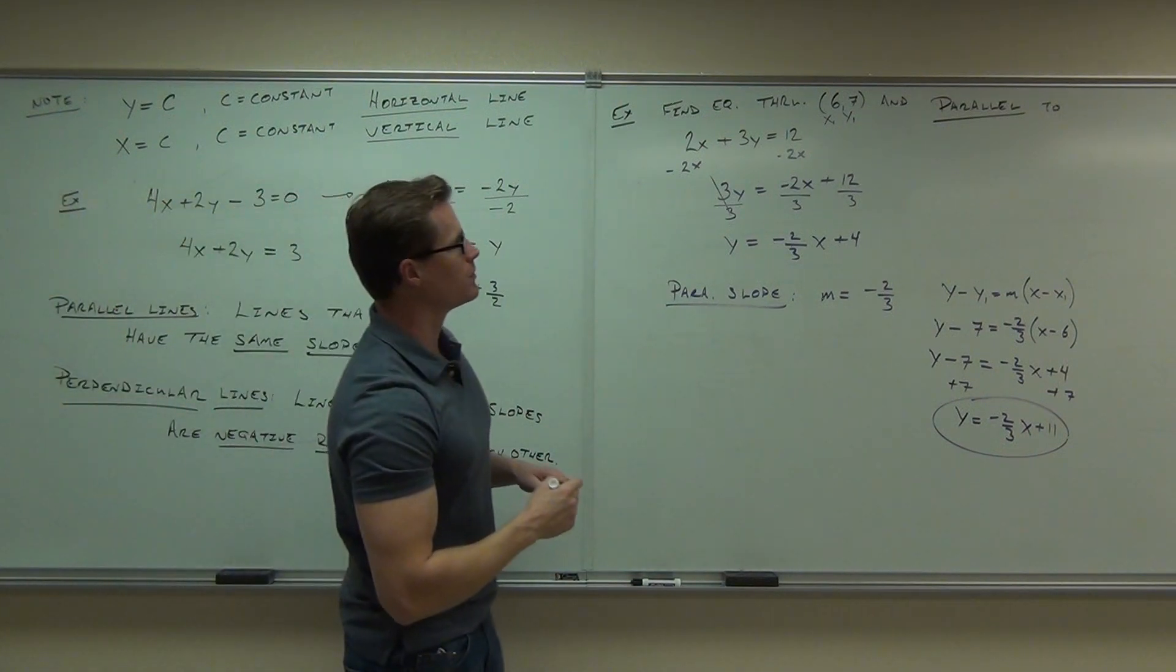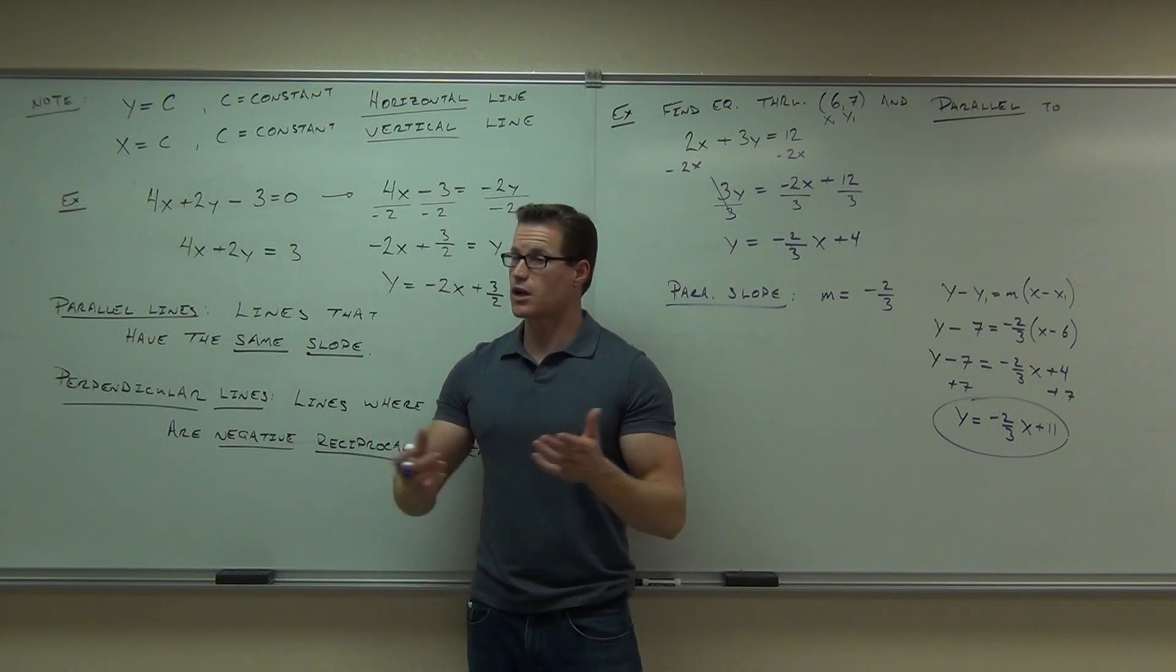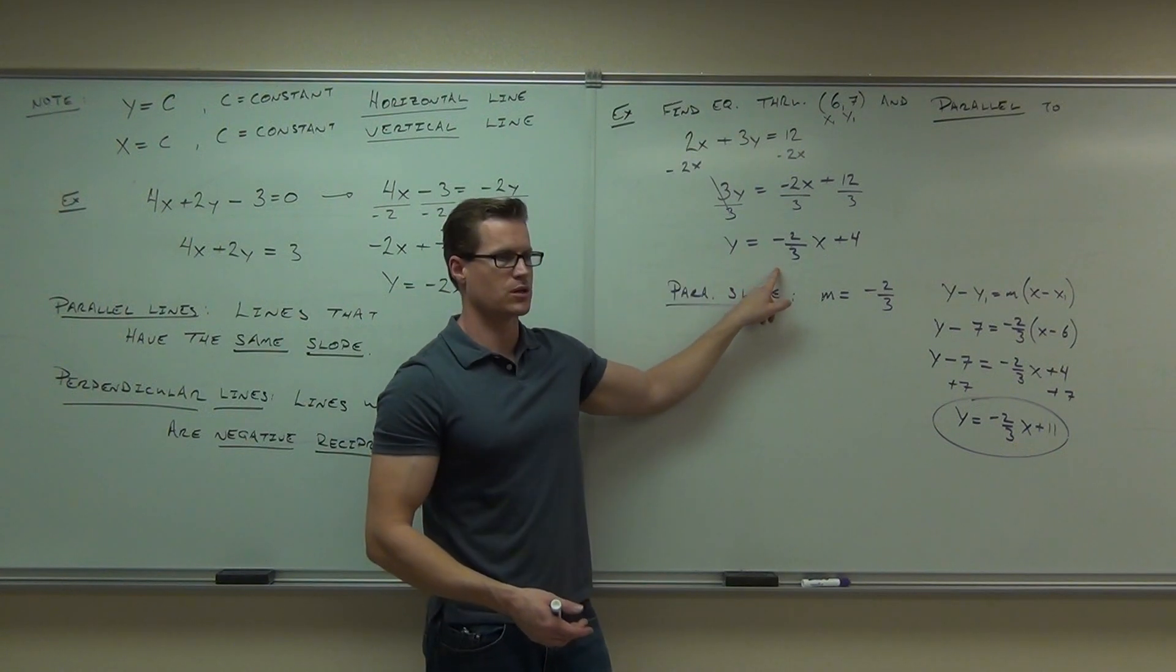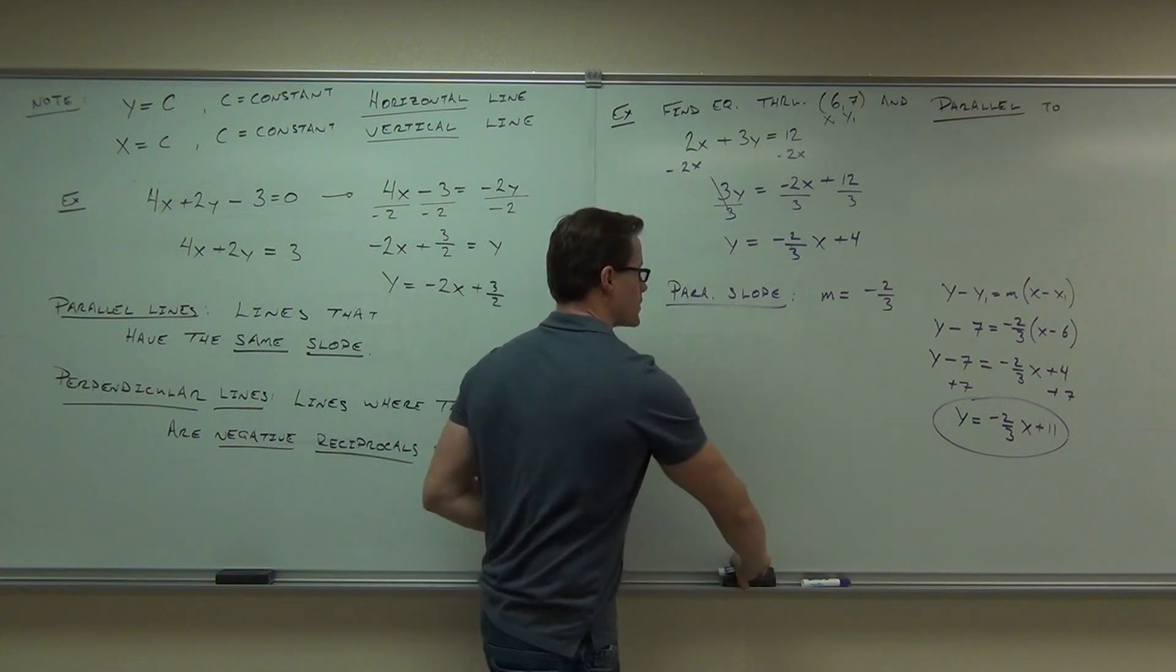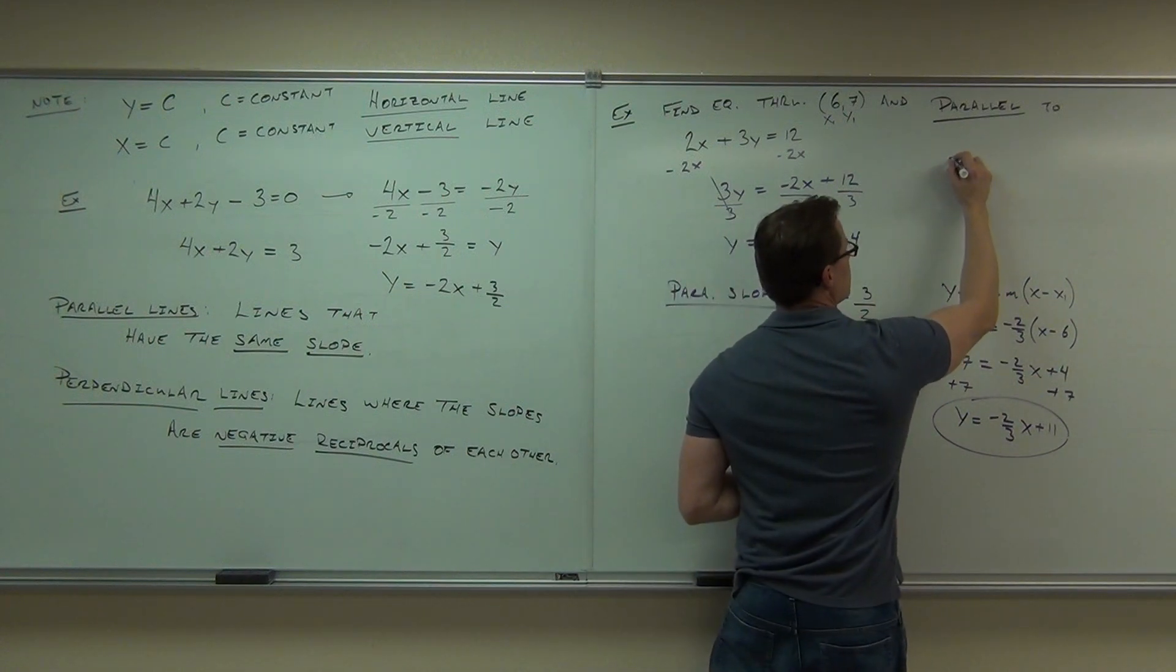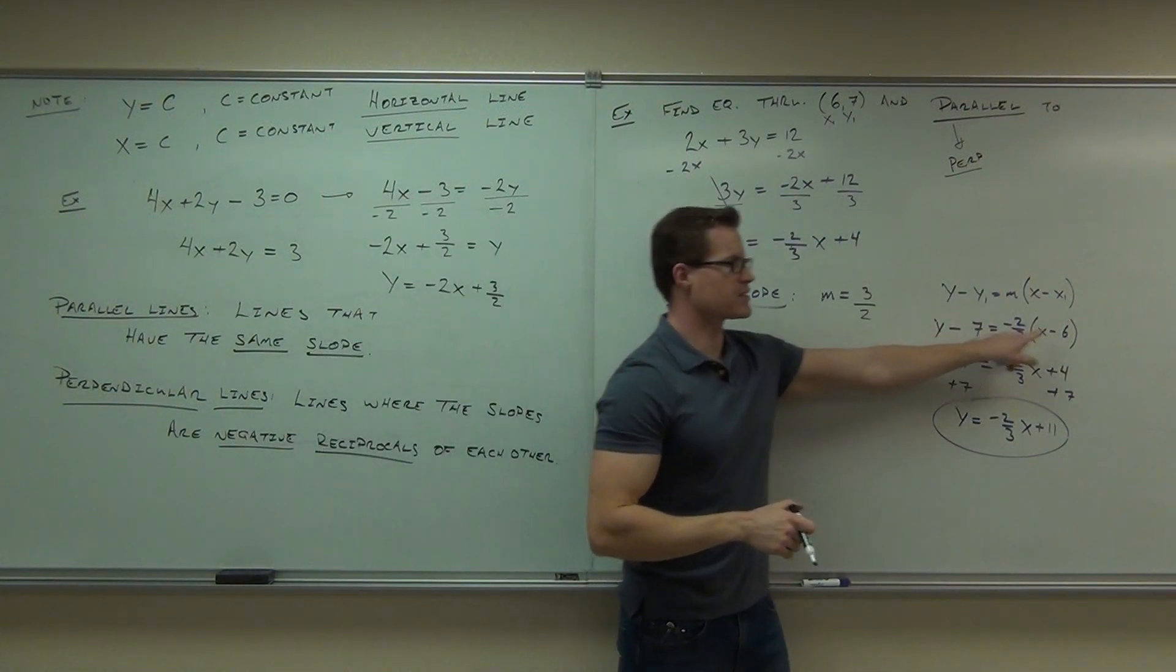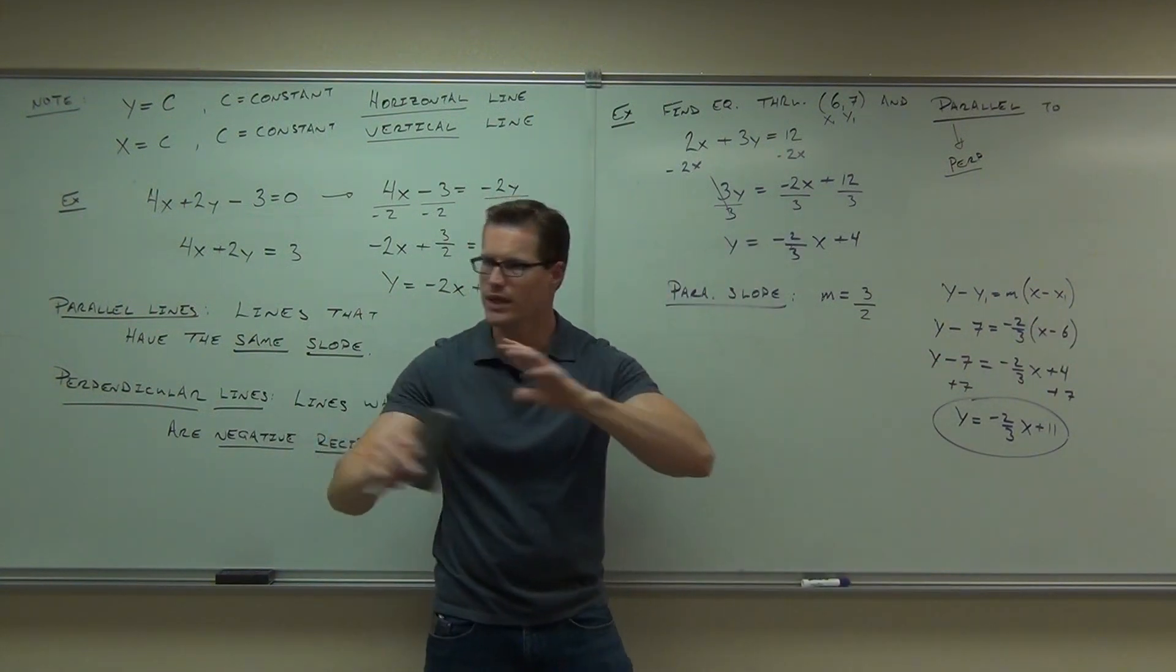What if I change the problem and instead of having parallel, I ask you to do perpendicular? Could you still do it? Let's talk about the only changes that would occur. If I'm talking about perpendicular, would this process change? Would this change? What's that going to become? 3. Okay, so this would become 3 halves. So here now we're talking about perpendicular. With the 7 and the 6 change? No, we're just talking about slope. The thing about this is parallel perpendicular only has to do with the slopes.